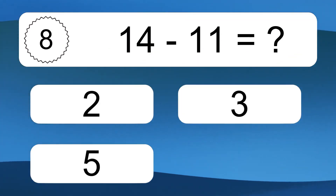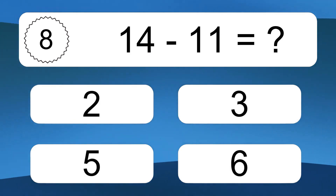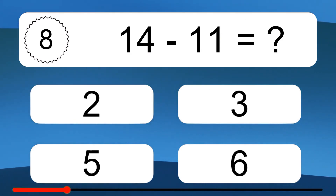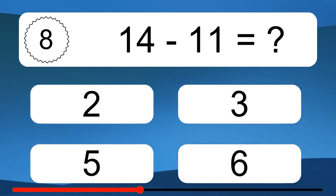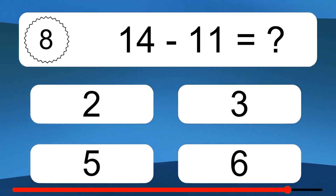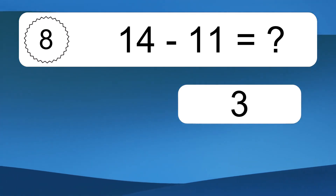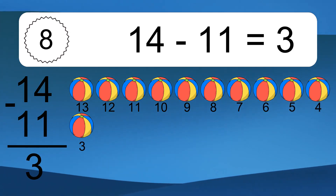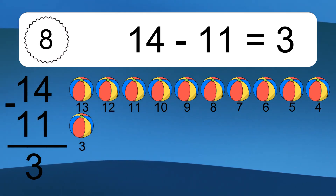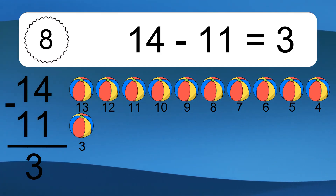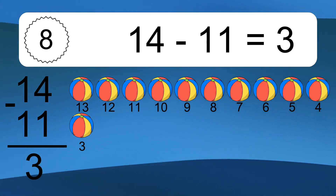14 minus 11 equals what? 14 minus 11 equals 3. Let's count it. 13, 12, 11, 10, 9, 8, 7, 6, 5, 4, 3.